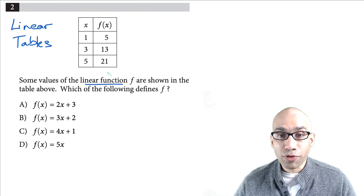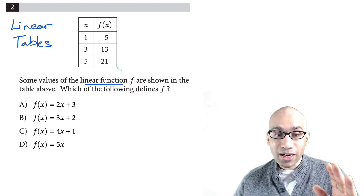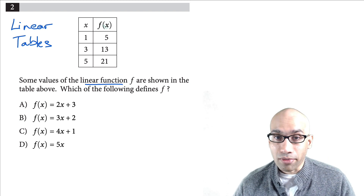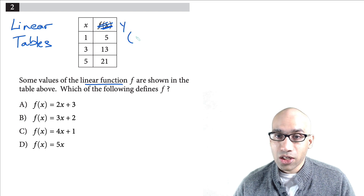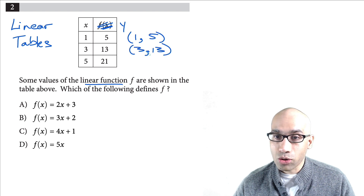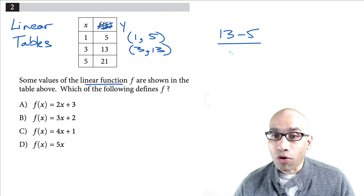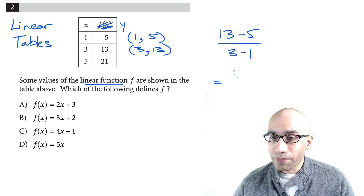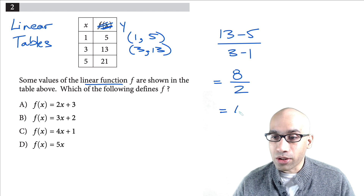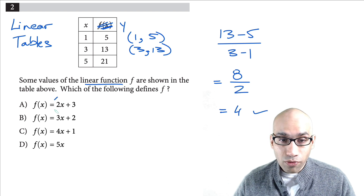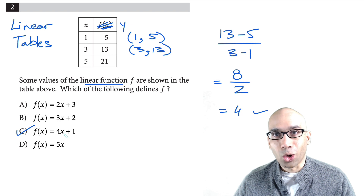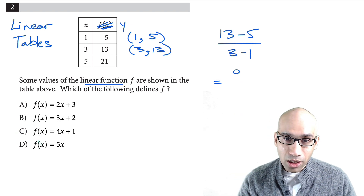Let's move on to the next problem — a linear tables type. You're given a linear function table. All you have to do is find the slope. You can treat f(x) as y, so take the two points (1, 5) and (3, 13) and find the slope: (13 − 5) over (3 − 1) equals 8 over 2, which is 4. That's your slope, and 4 is the correct answer.